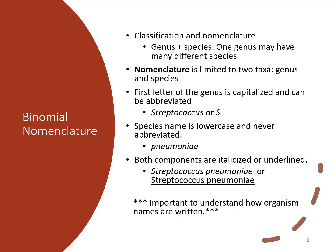With binomial nomenclature, we break the organism down to the simpler form, which is the genus and the species. The first letter of the genus is capitalized but can be abbreviated. For example, with Staphylococcus bacteria, you could abbreviate it with just an S period. Species names are in lowercase and they're never abbreviated.